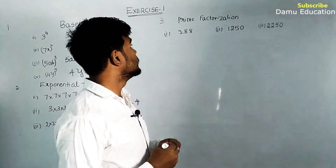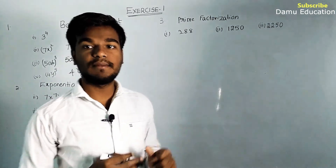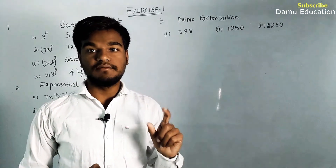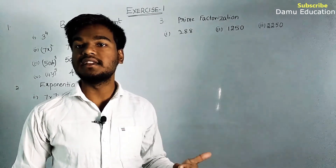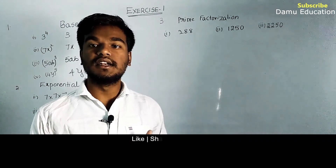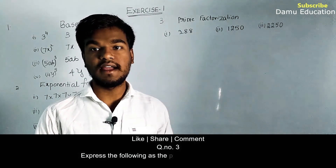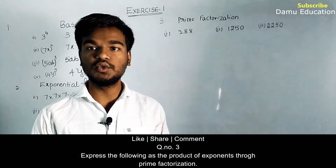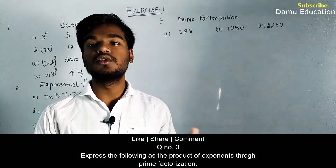The third question asks us to express numbers in exponential form using prime factorization. In prime factorization we use only prime numbers. We always start dividing by 2 first. If the number is not divisible by 2, we try 3; if not by 3, we try 5, and so on. Do not skip ahead to 5, 7, or 11 directly — always proceed in order: 2, then 3, then 5.